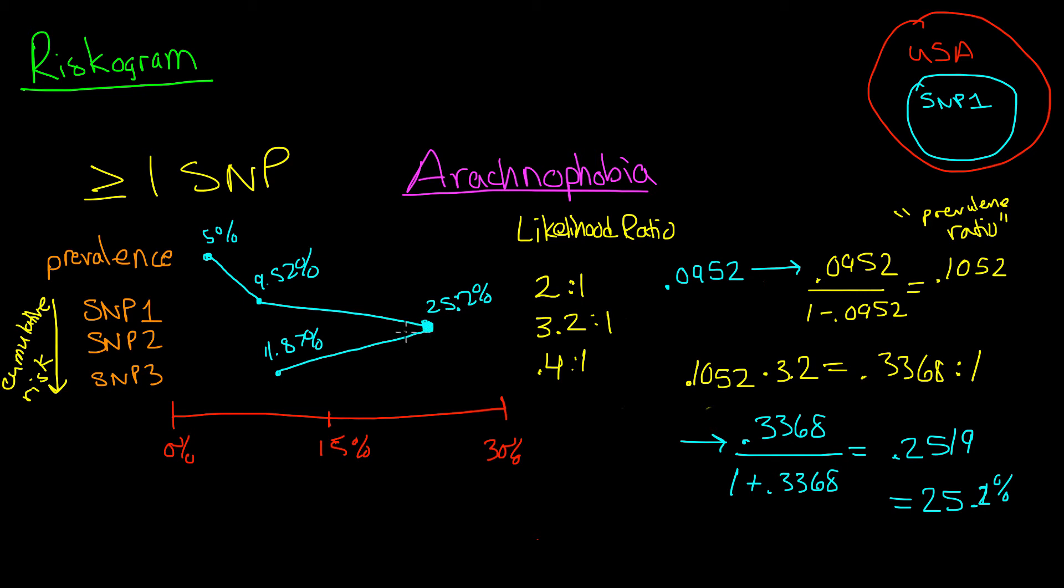Maybe not only do they have SNP2, but they also have SNP3. And then their chances are now towards 11%. Maybe there are other SNPs involved that we haven't discovered yet or that we don't know about. And that would further influence this particular person's chance of having arachnophobia.